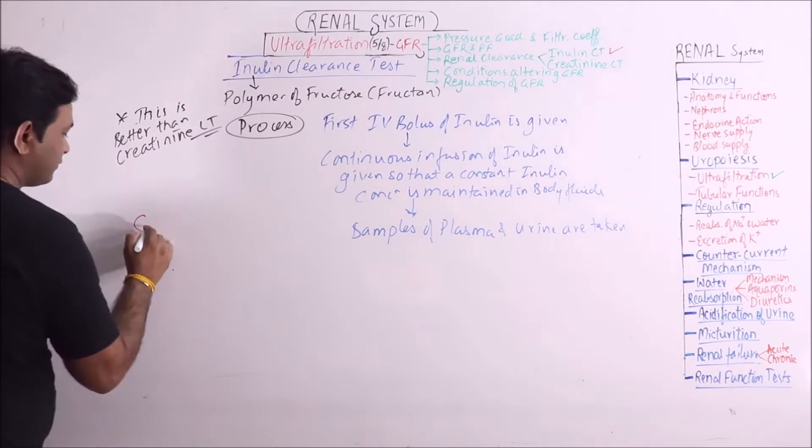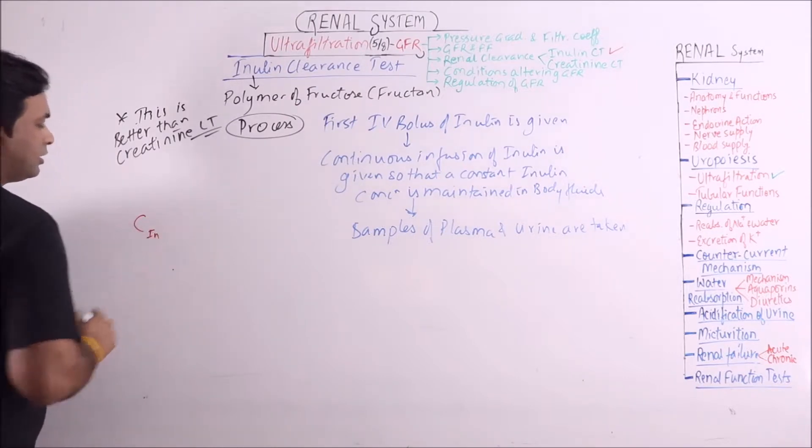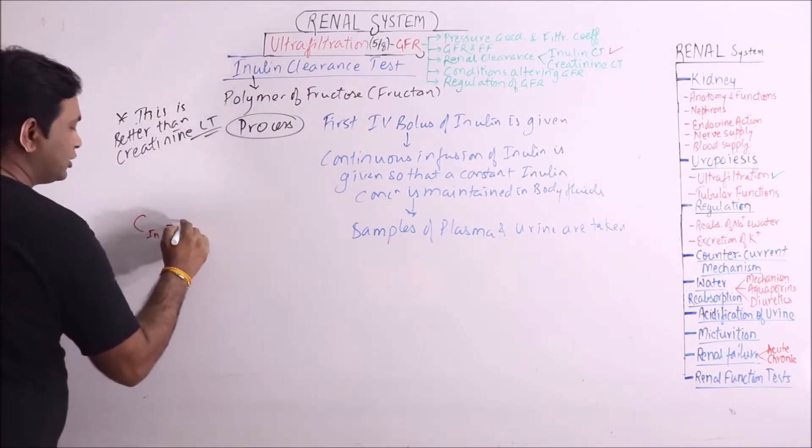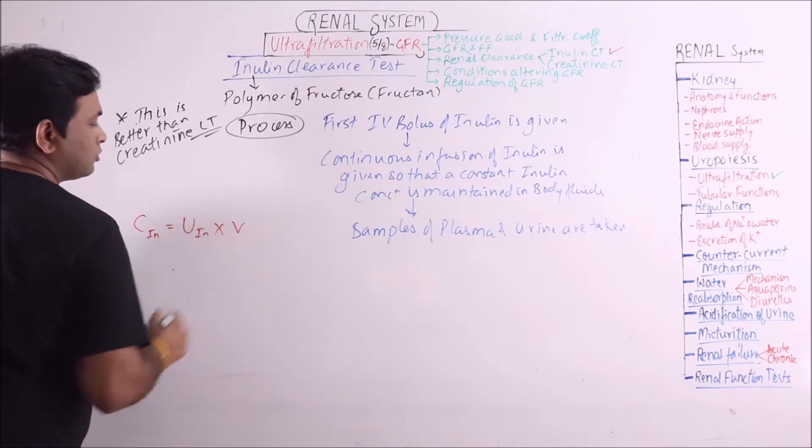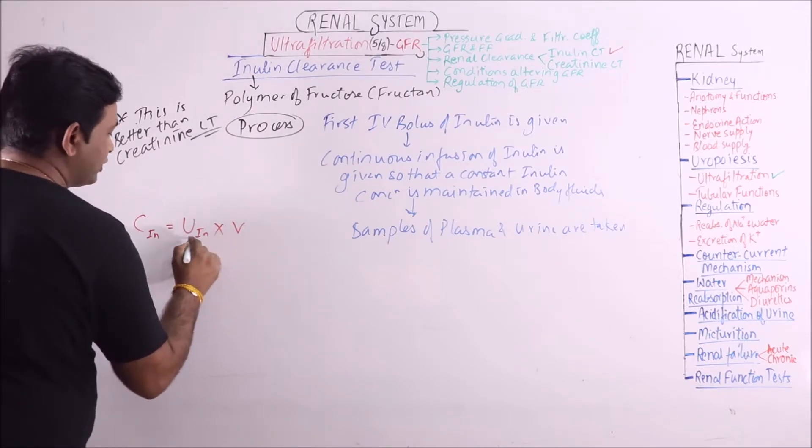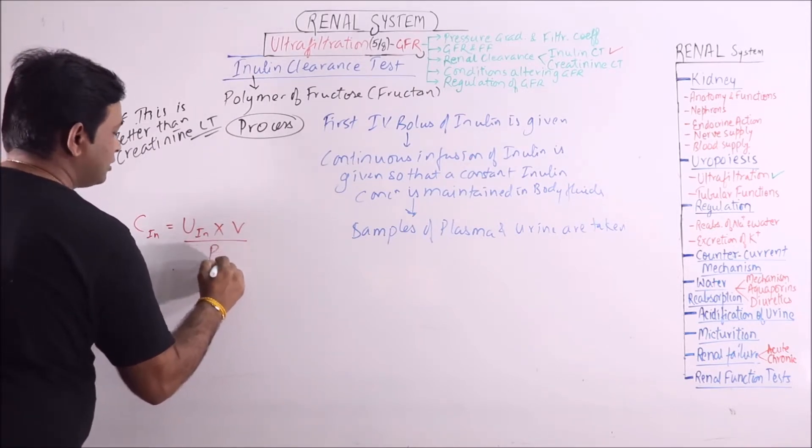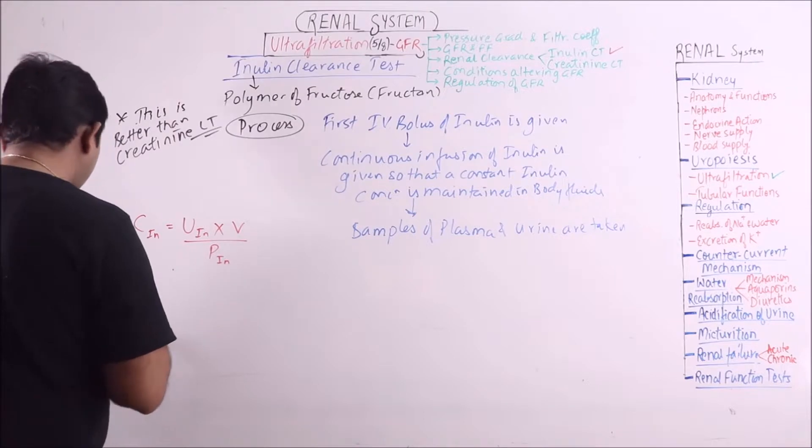The formula is the same. When it is applied to inulin, clearance of inulin equals urine concentration of inulin times urine flow per unit time divided by plasma concentration of inulin.